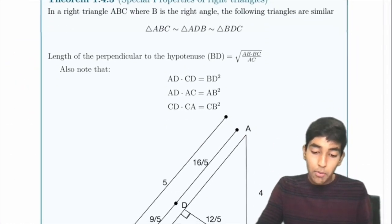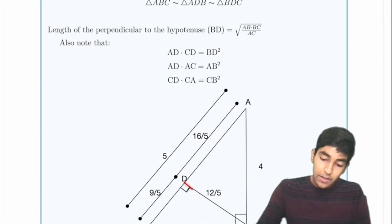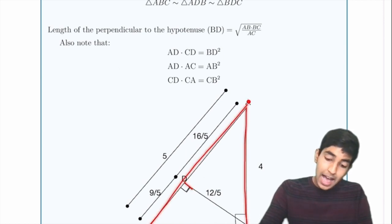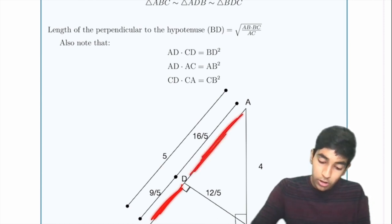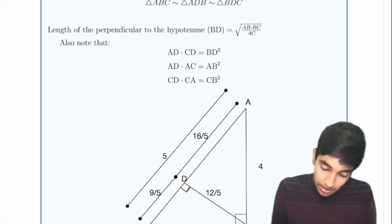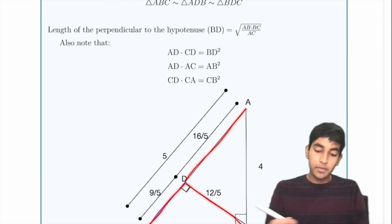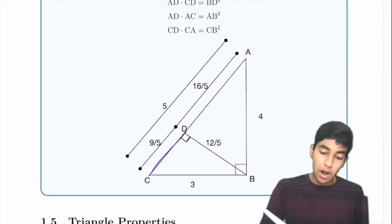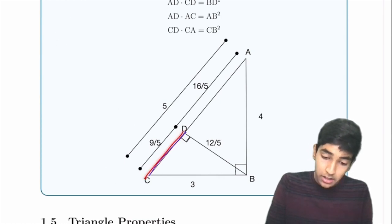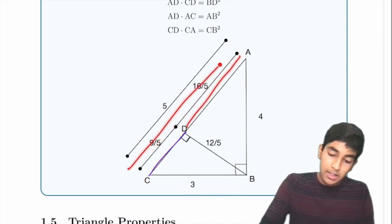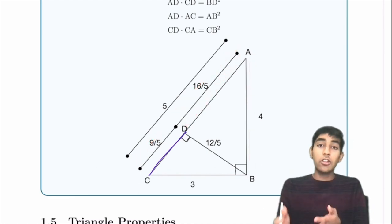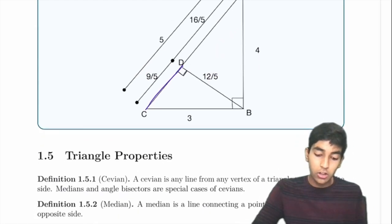Next, special properties of right triangles. If we have a right triangle and drop the altitude to the hypotenuse, there are a few special properties: CD × AD = BD², CD × CA = CB², and DA × AC = AB². This is a shortcut that can be derived with similar triangles.